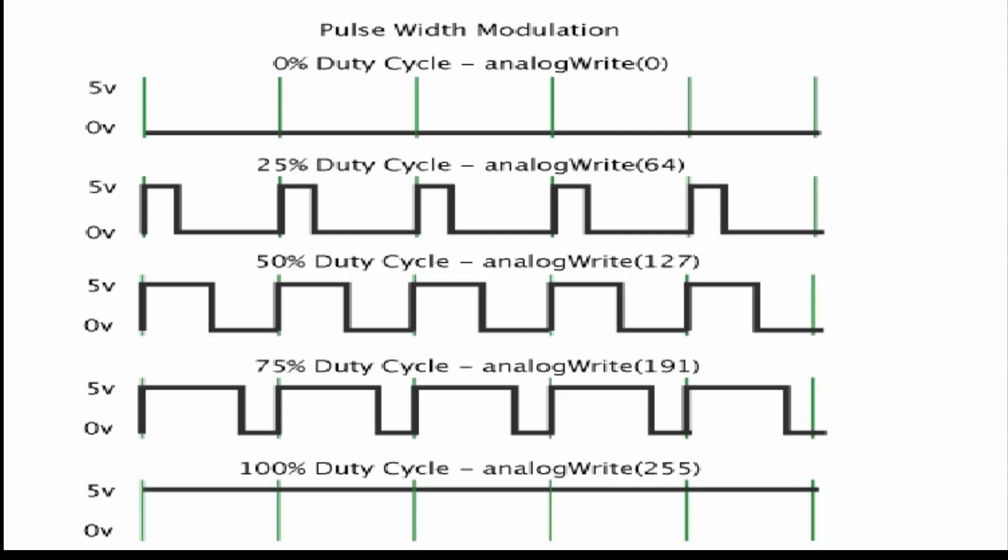As you can see in the first signal, duty cycle is 0 because the signal is OFF in the total period. For example, in the first period, the signal is OFF all the time. In the second signal, the signal is ON for 25% so duty cycle is 25%, and we will write 64 inside the analogWrite function. And similarly, for the third signal, duty cycle is 50%, and we will write 127 inside the analogWrite function. Because inside the analogWrite function, we can write a maximum of 0 to 255. And at the last signal, as you can see, the signal is ON 100% of the time. So duty cycle is 100%, and we will write 255 inside the analogWrite function.